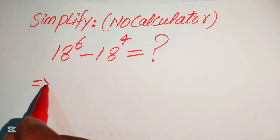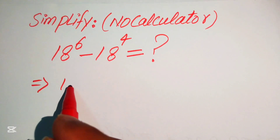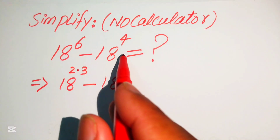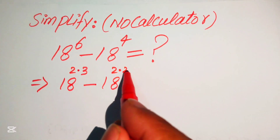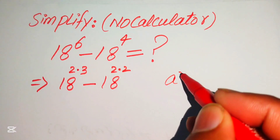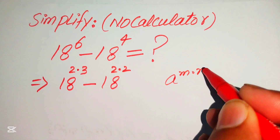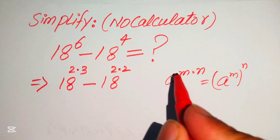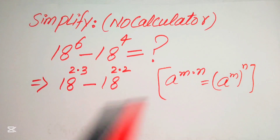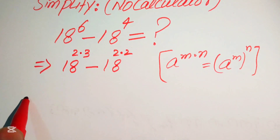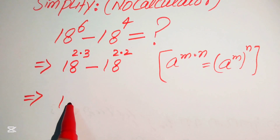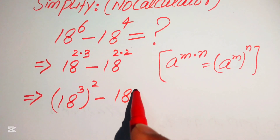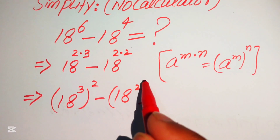First we rewrite this expression — 18 to the power of 6 — and we write 6 as 2 times 3, minus 18 to the power of 4, written as 2 times 2. We apply the exponent law: a to the power of m×n equals a to the power of m, to the power of n. So we write these as 18 to the power of 3 whole squared, minus 18 to the power of 2 whole squared.